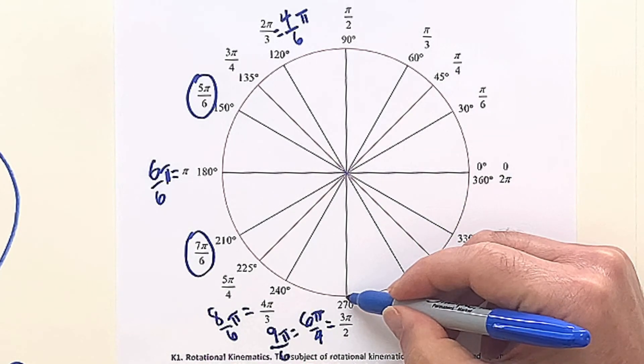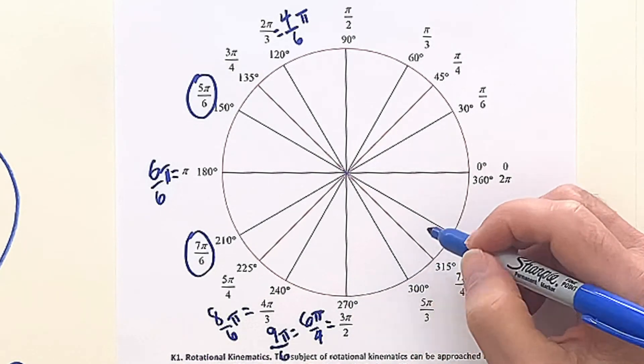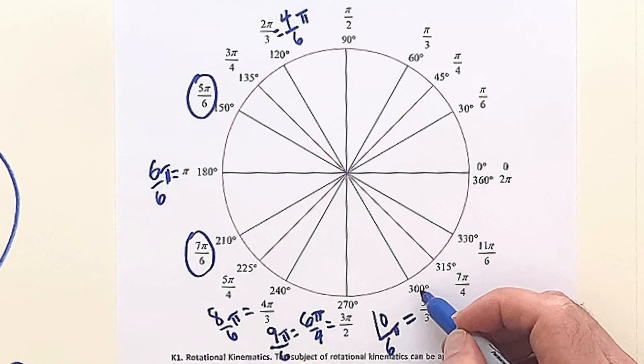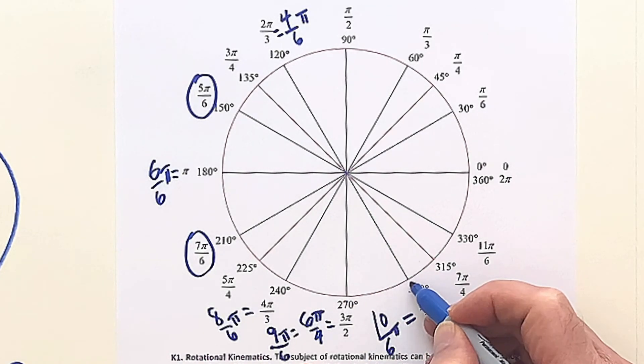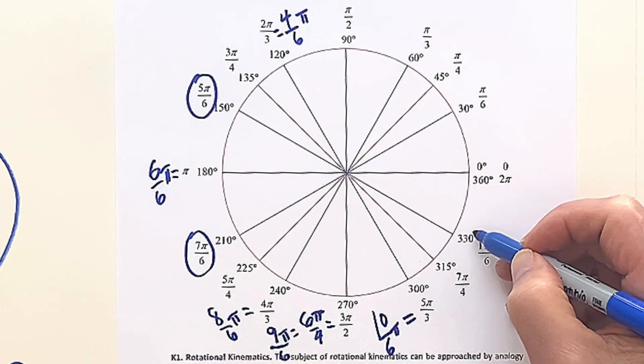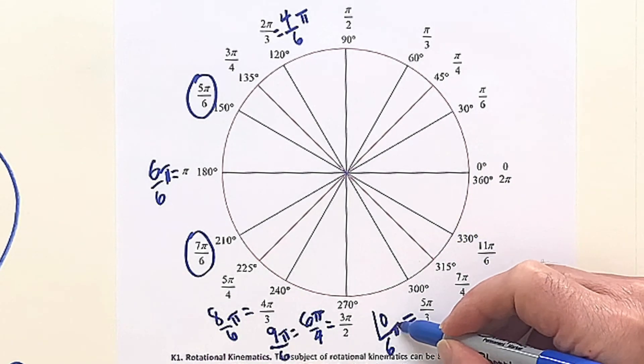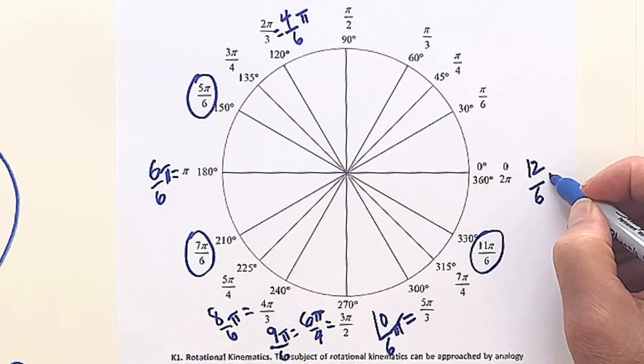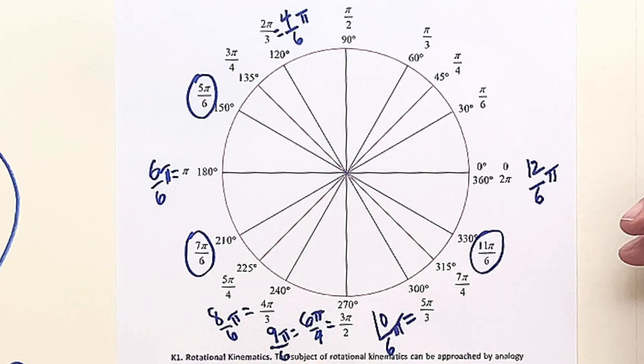So it's all working out so nicely. And then if we go to 10 sixths, 10 sixths reduces to 5 thirds. Add another 30, there's your 300. Add 30 more, we're at 330, and that would be 11 sixths. And then finally, 12 sixths gets you back to 2 pi. This is back to 0. So it's a nice little review of trigonometry that we include here in our intro section for the chapter on rotation.